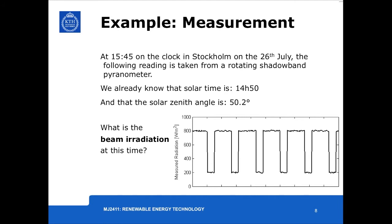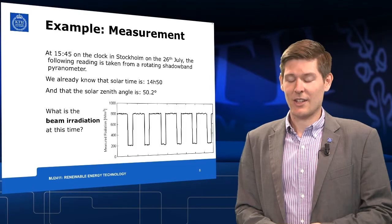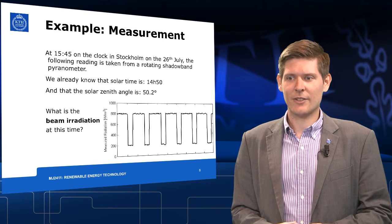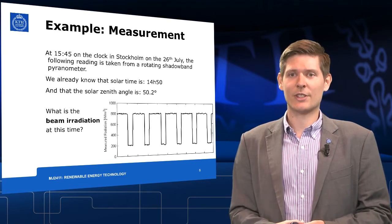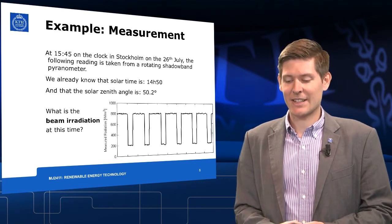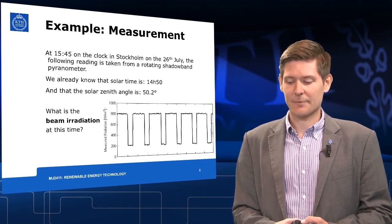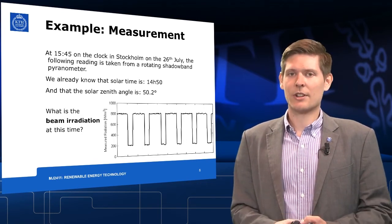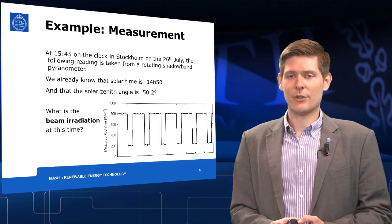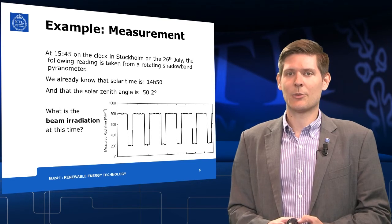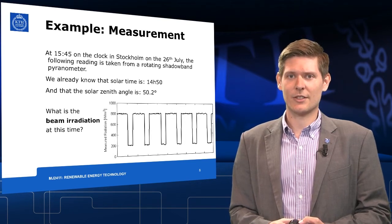As the next step, we are going to calculate the beam radiation for Stockholm, again the same day, the 26th of July, at a clock time of 15:45, which corresponds to a solar time of 14 hours and 50, and a senate angle of 50.2 degrees, which we have already calculated. I am going to recommend you now that you stop the video for a few minutes or a few seconds, calculate the beam radiation yourself, and I am going to show you the results in a few minutes.